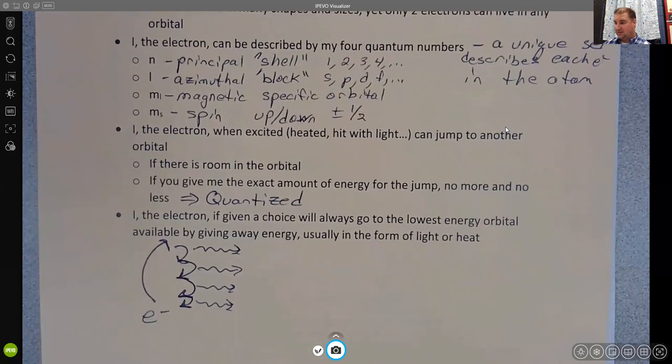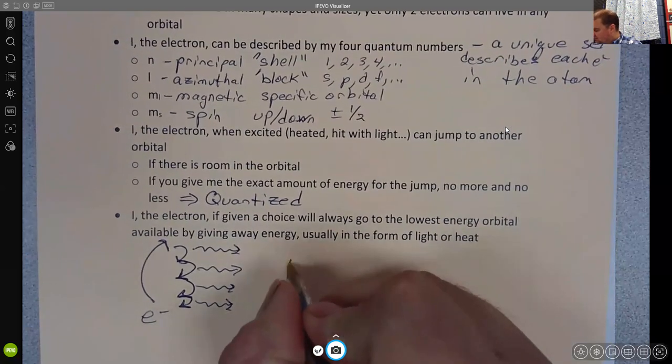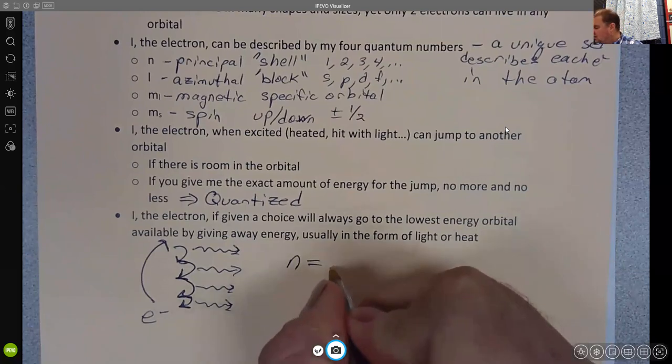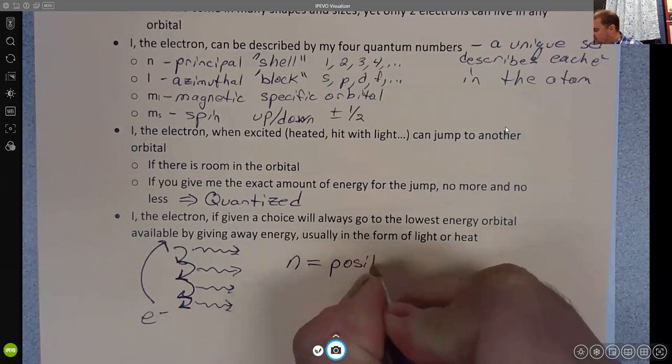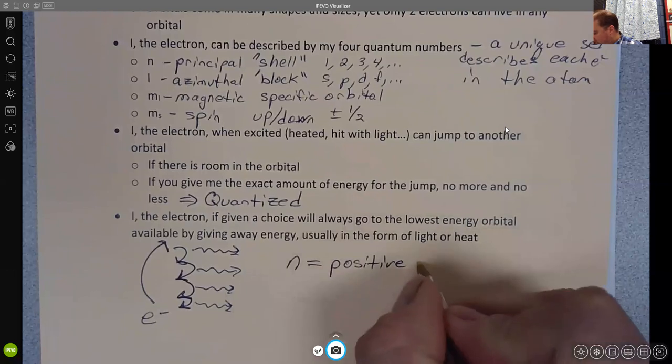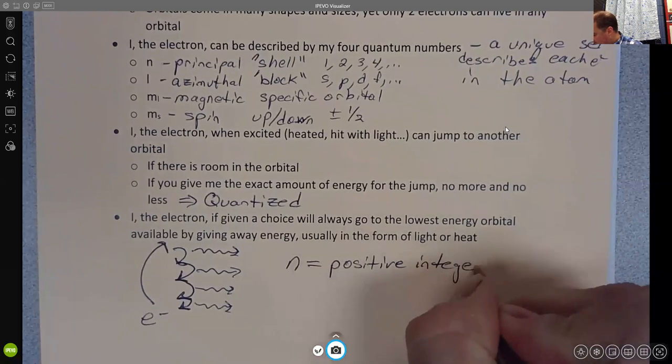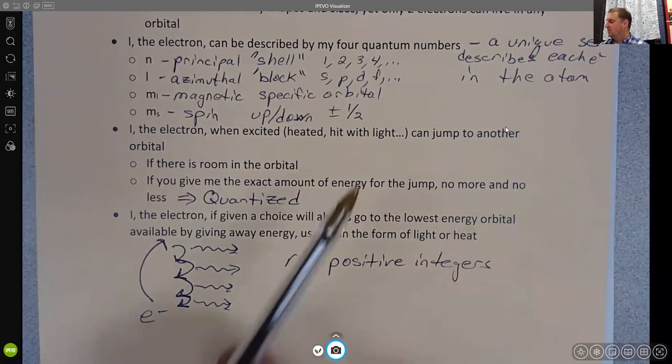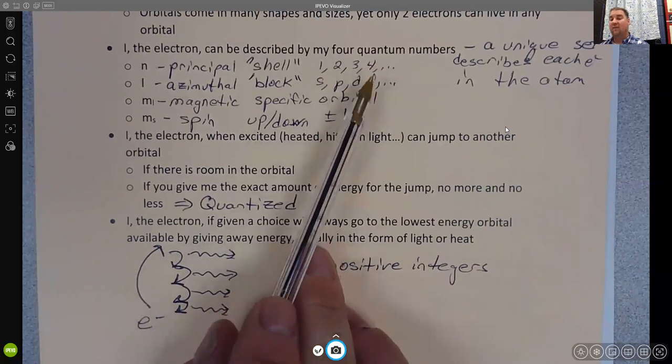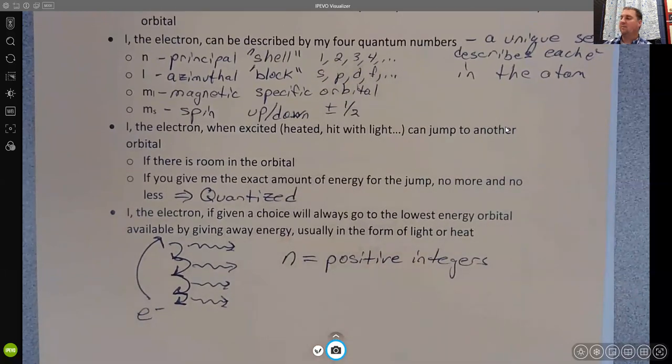The allowed values for these, the allowed values for n are positive integers. In other words, as I showed above, one, two, three, four, five, six, seven, etc.